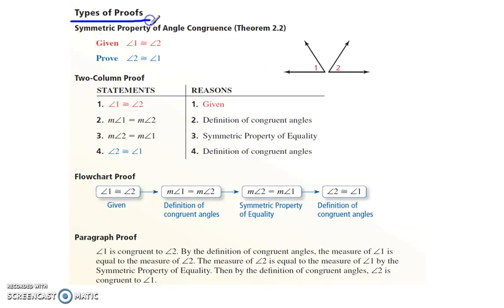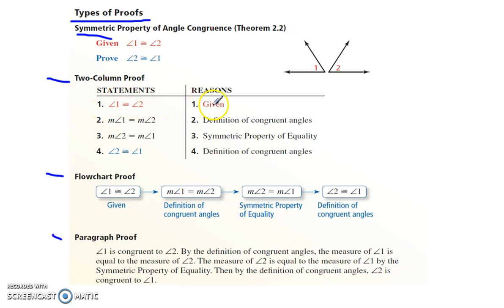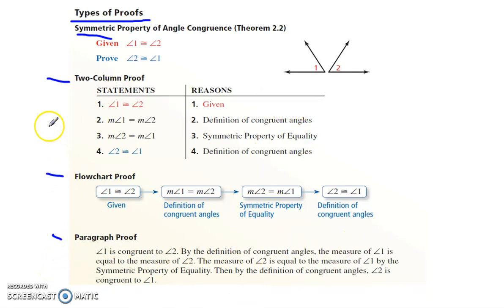Here's a summary of the types of proof we looked at: the two-column proof, the flowchart proof, and the paragraph proof — all shown side by side. Given that angle 1 is congruent to angle 2, we want to prove angle 2 is congruent to angle 1. That's the symmetric property. From the given congruency, we know their measures are equal. By the symmetric property of equality we can flip those around, and since their measures are equal, we state they are congruent by the definition of congruent angles. This same proof can be written as a flowchart or as a paragraph — the content is identical.